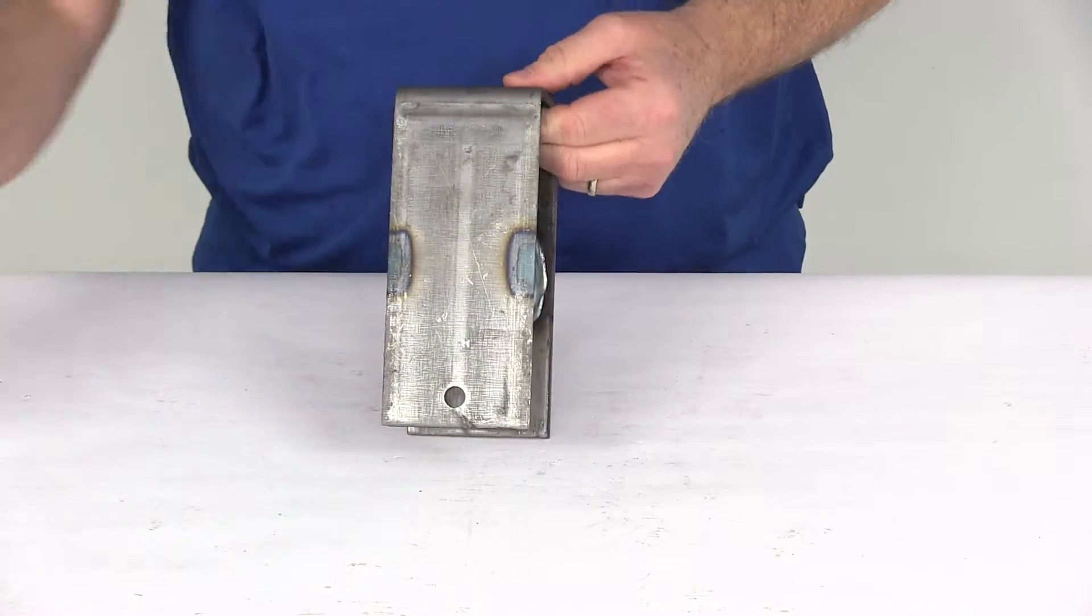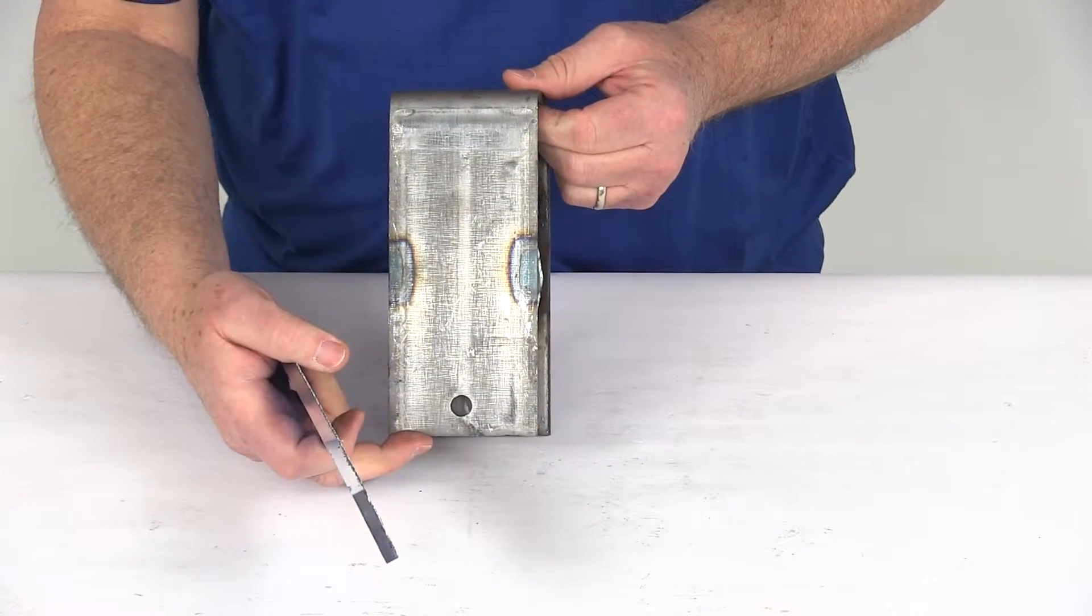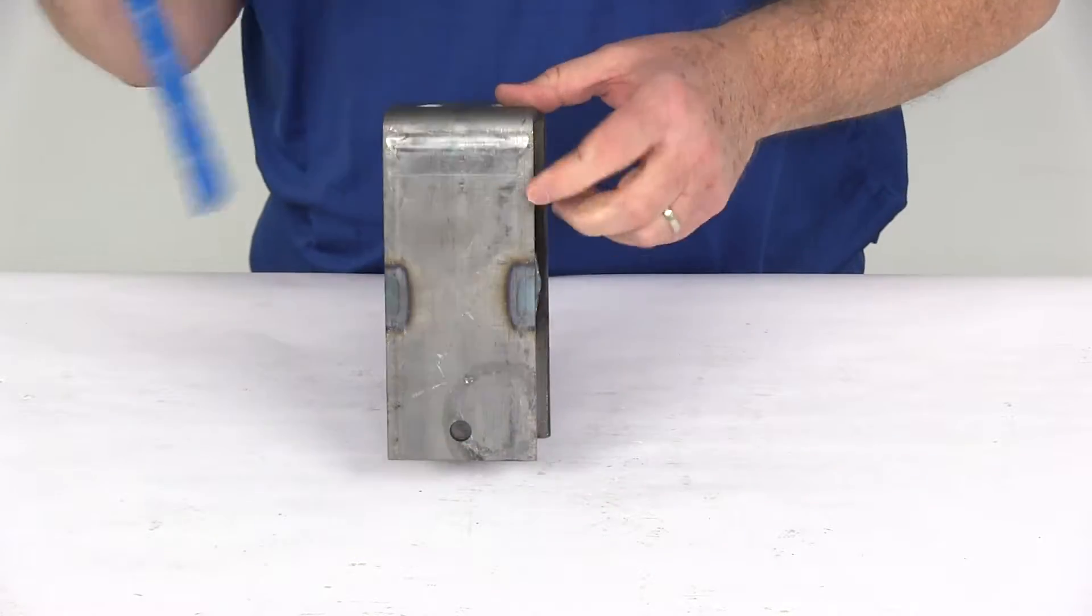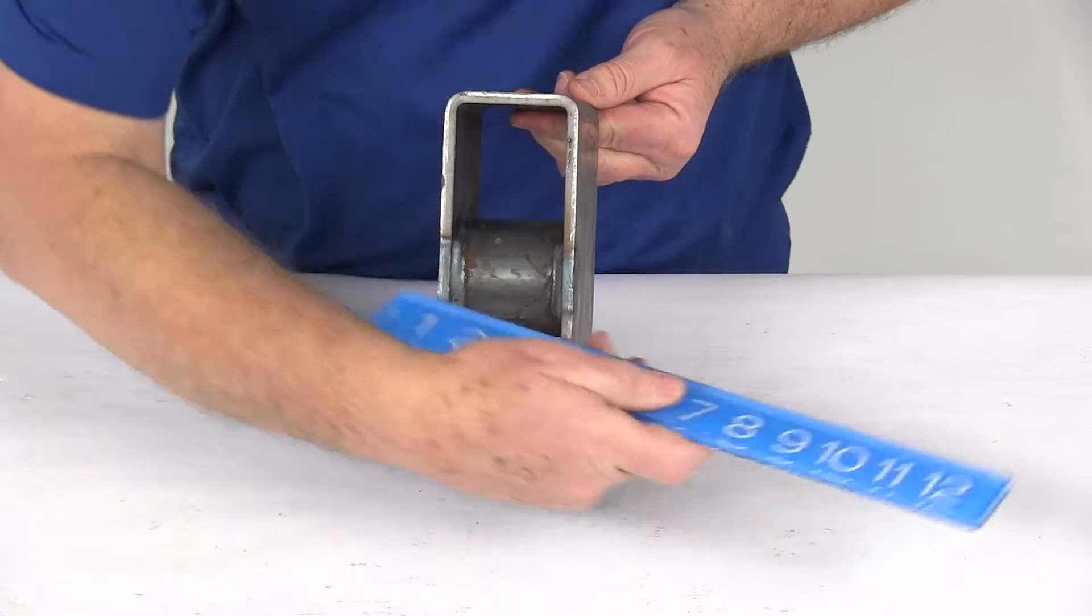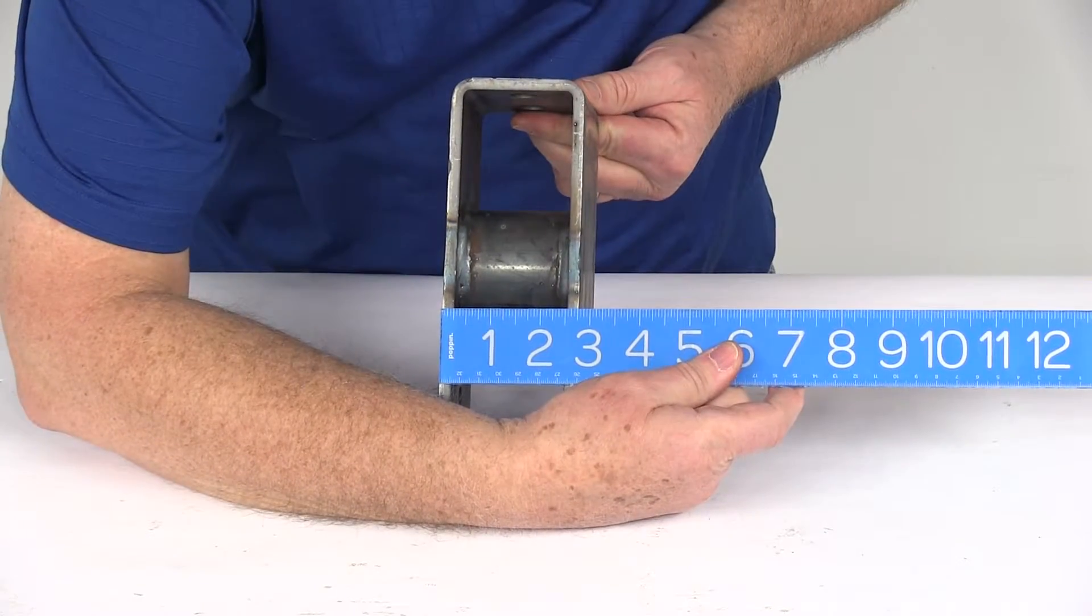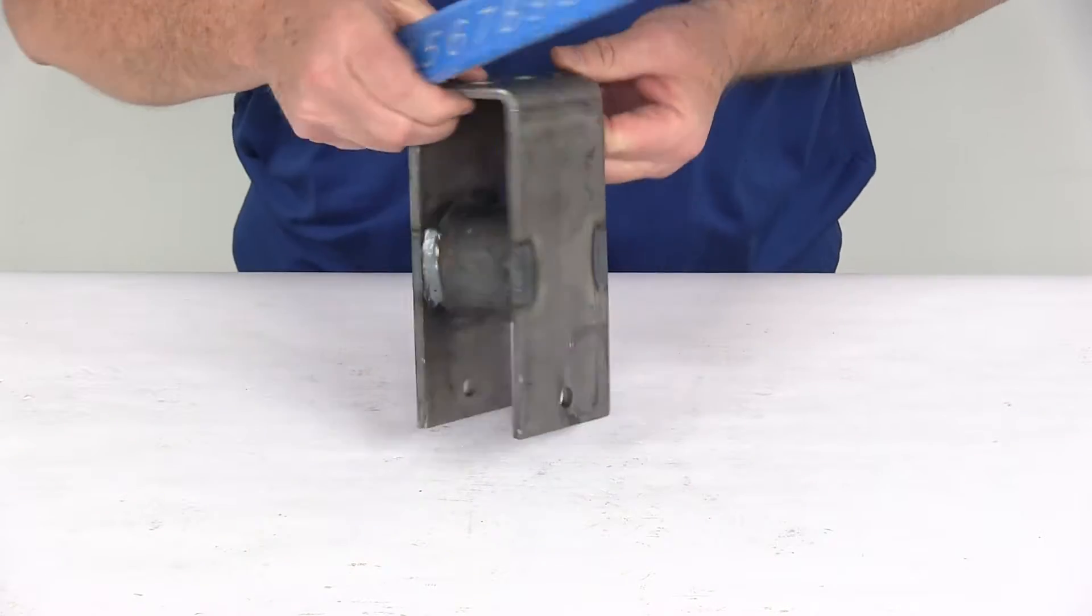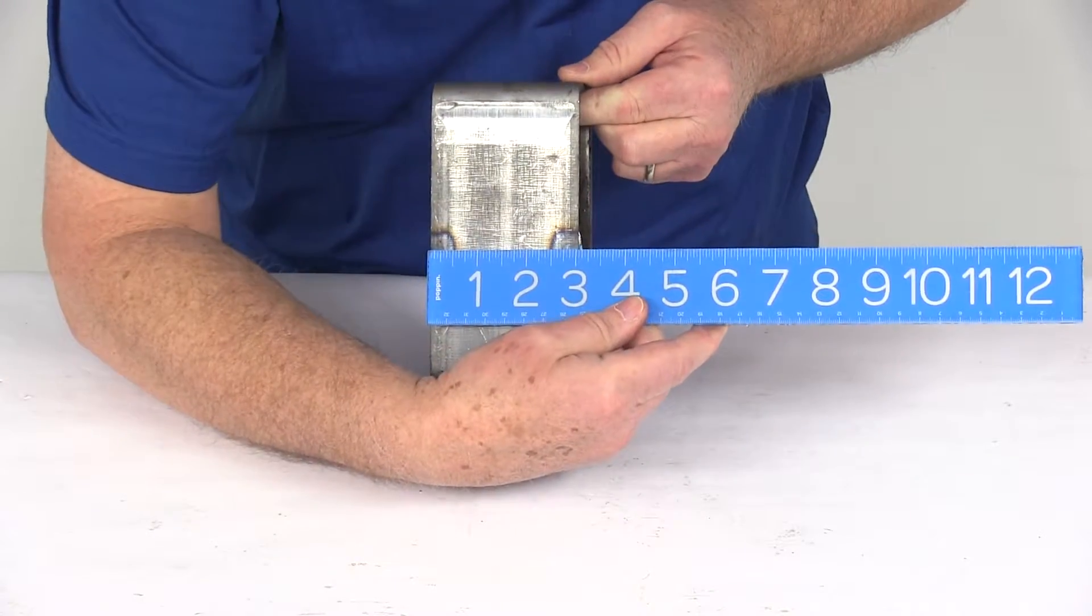I'll give you some overall dimensions on this. The overall height from the very bottom to the very top is going to be right at 7 inches. The width on it is going to be right at 2 and 3 quarter inches. The inside width is 2 and 5 sixteenths. The depth on it is right at 3 inches.